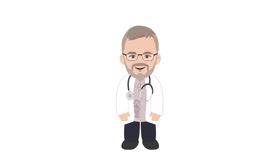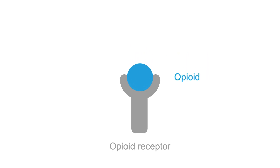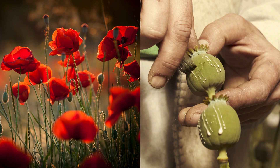This will require understanding the difference between opioids and opiates. An opioid is defined as any substance that binds to an opioid receptor. There are three broad classes of opioids: naturally occurring opiates, semisynthetic opioids, and purely synthetic opioids. As their name suggests, naturally occurring opiates are opioids that are found in nature.